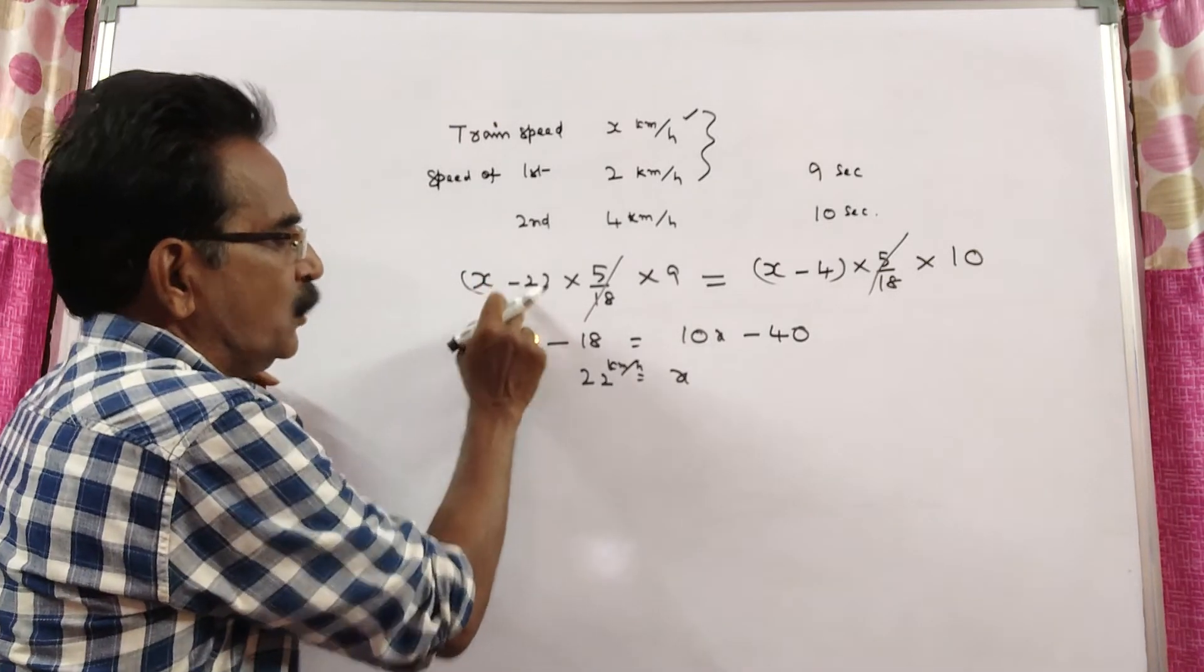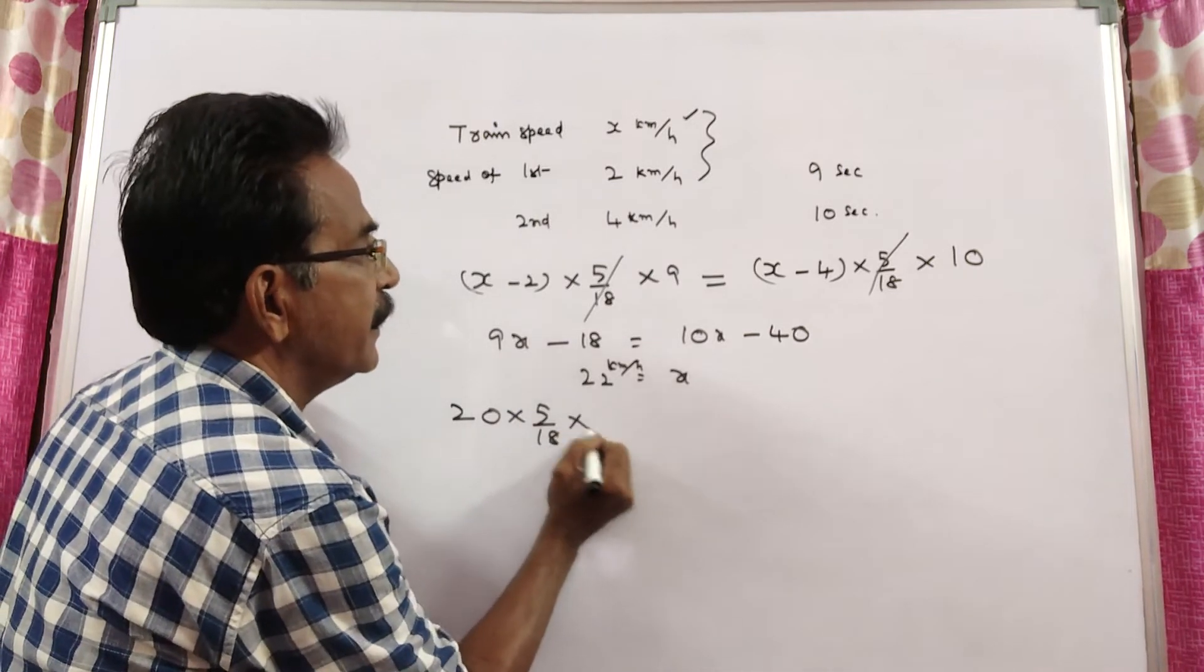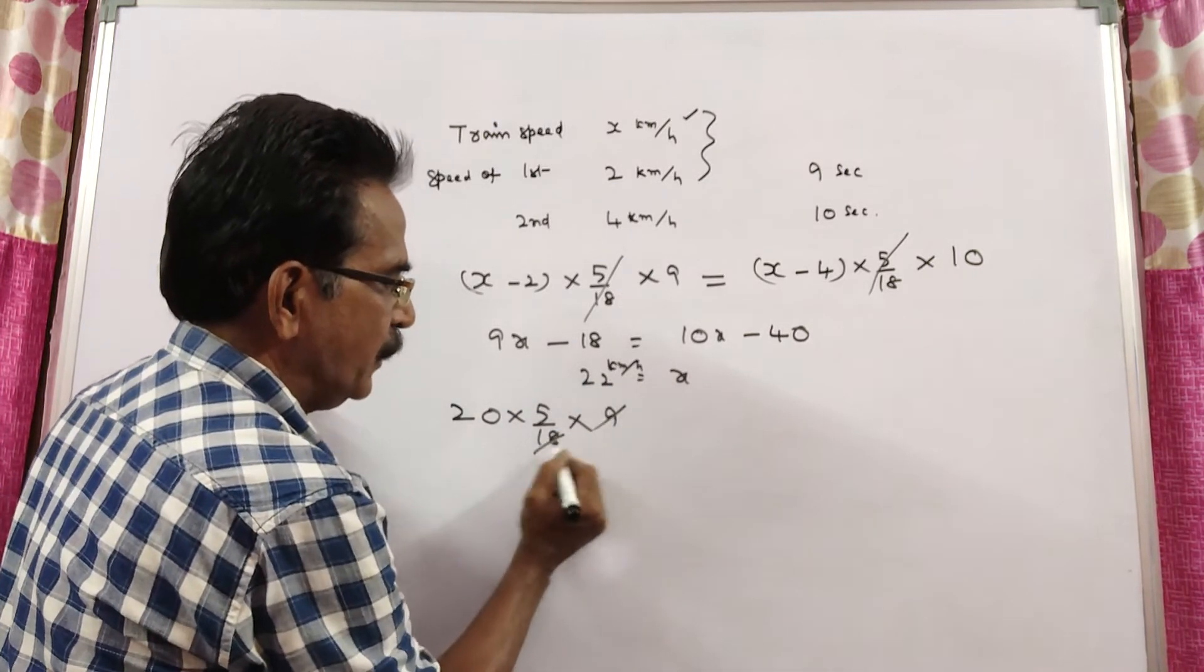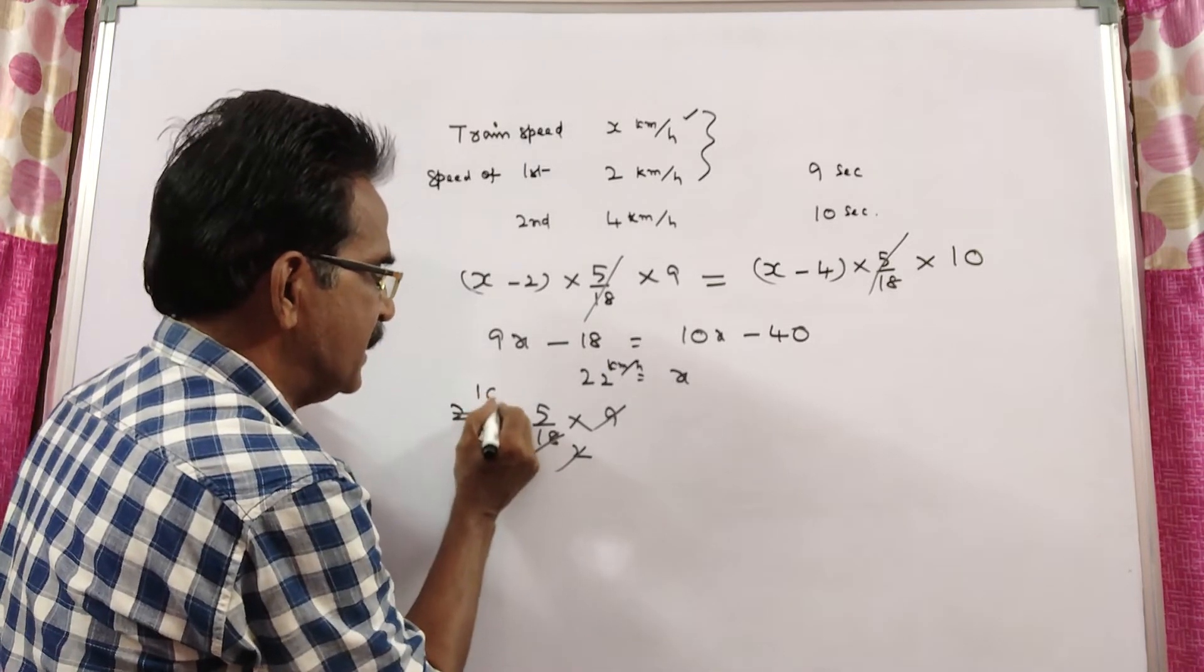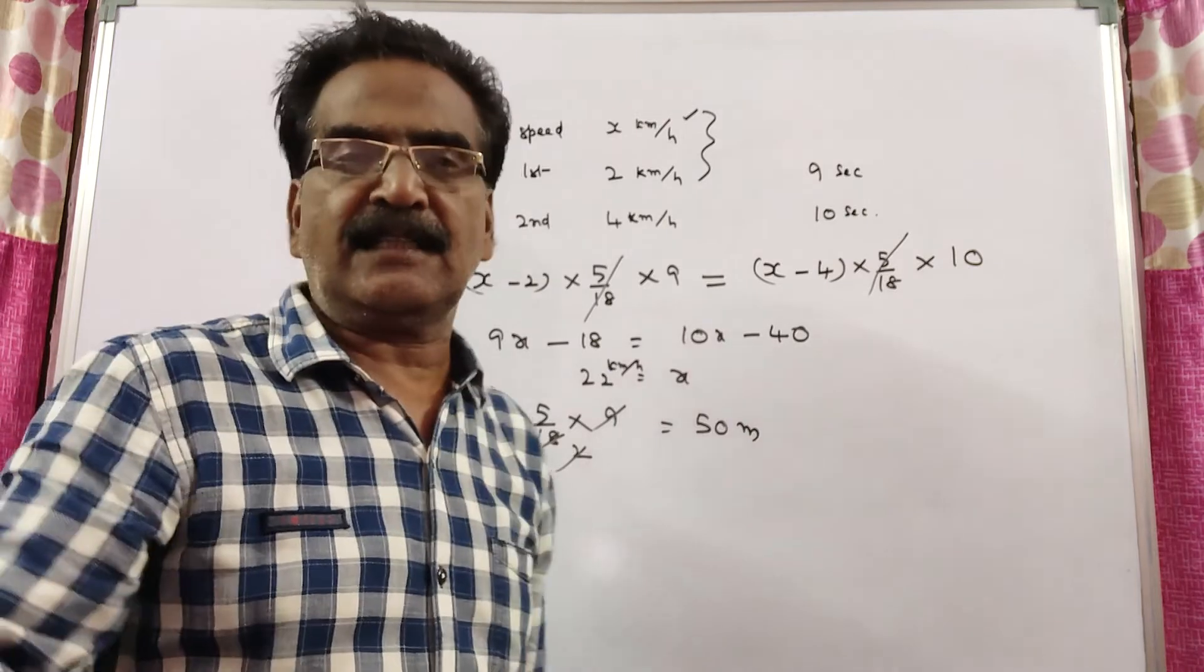22 minus 2, 20 into 5 by 18 into 9. 9 twos, 2 tens, 10 nines room. 50 meters is the length of the train,